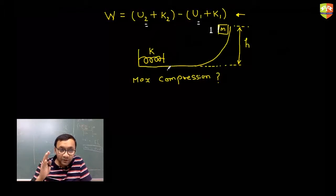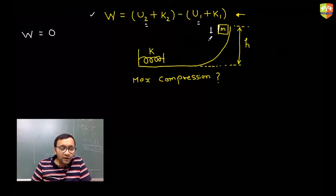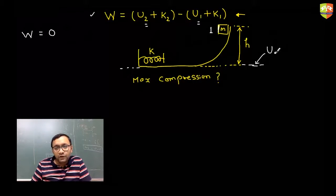So the spring will get compressed until the velocity of mass m goes to zero. At maximum compression, the velocity of mass m will become zero. So let's try to use this particular relation. Work done is zero — gravity is doing the work, but that work you are considering as potential energy. And this line is the reference horizontal line for which you are assuming gravitational potential energy to be zero.